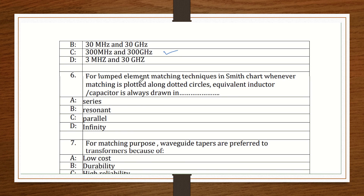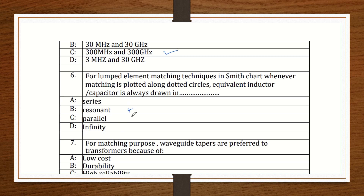Question number 6: For lumped element matching technique on a Smith chart, whenever matching is plotted on a dotted circle, its equivalent inductor and capacitor is always drawn in which configuration — series, parallel, resonant, or infinity? In the ZY chart, solid circles represent the Z chart and dotted circles represent the Y chart. Components related to the Y chart are always connected in parallel. Therefore, option C — parallel — is correct.